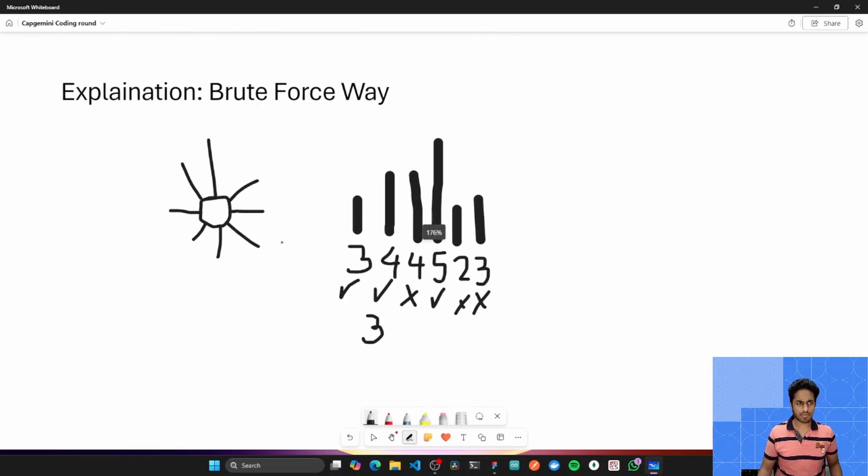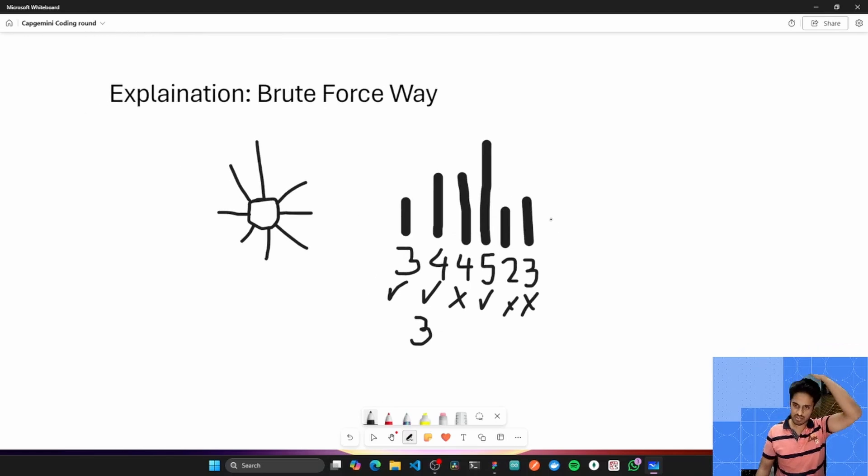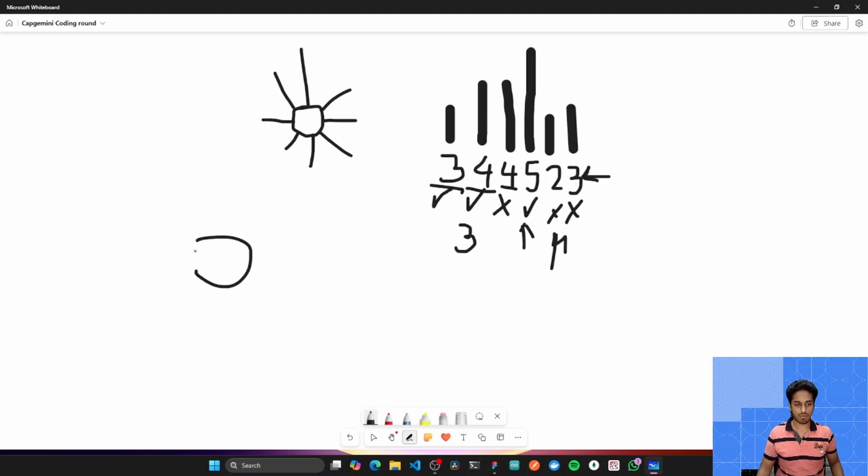Now there are two approaches. Let me explain you the brute force way first. What you can do is start a for loop from behind. Start with 3 and check all the buildings before it. If any of them are taller than 3, break from that loop. Sorry, continue from that loop and move on to the next building. And repeat the process with 5, 4, 4 and 3. This will run in O of n square time.